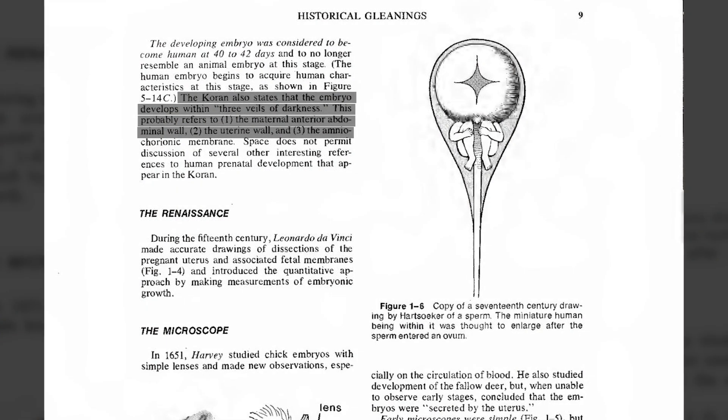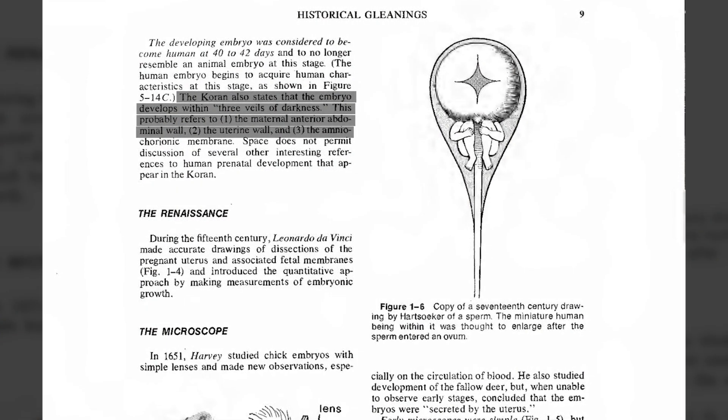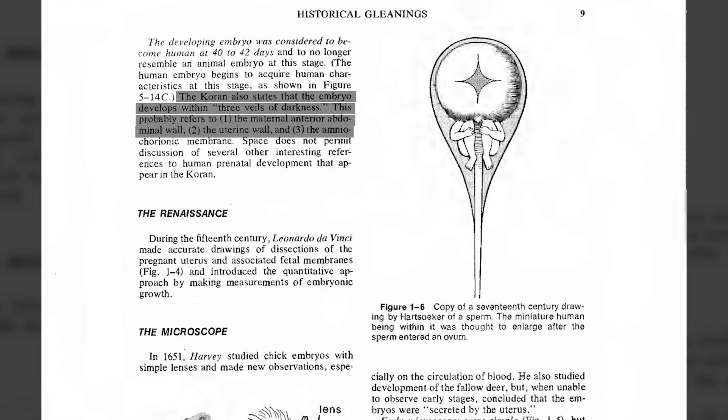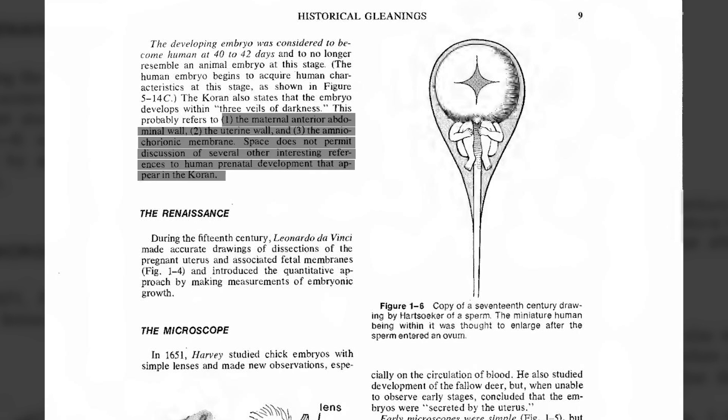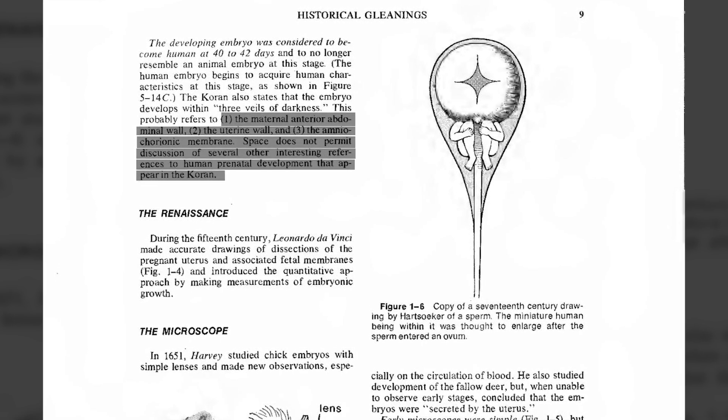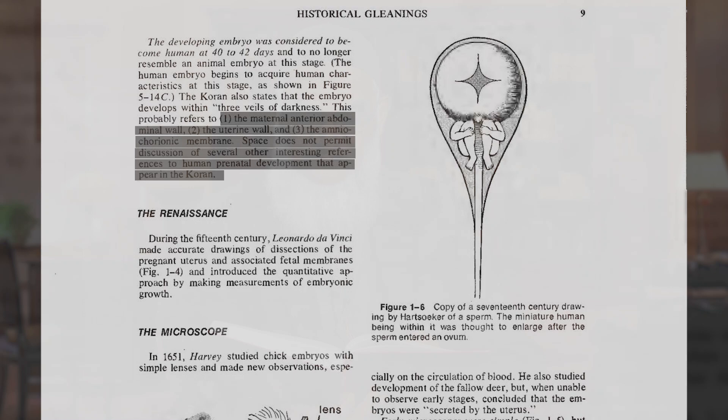The Quran also states that the embryo develops within three veils of darkness. This probably refers to three layers he identifies: one, the maternal anterior abdominal wall; two, the uterine wall; and three, the amniochorionic membrane. He notes that space does not permit discussion of several other interesting references to human prenatal development that appear in the Quran.